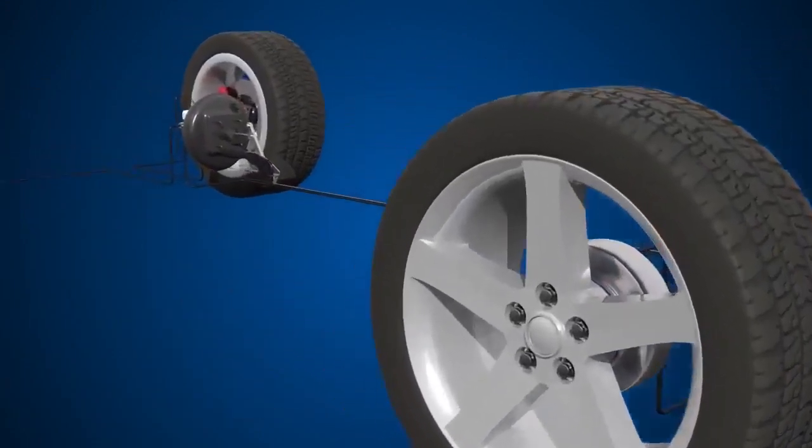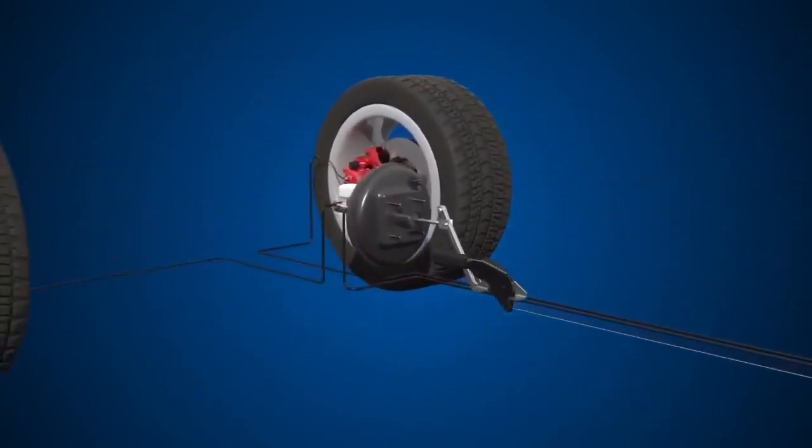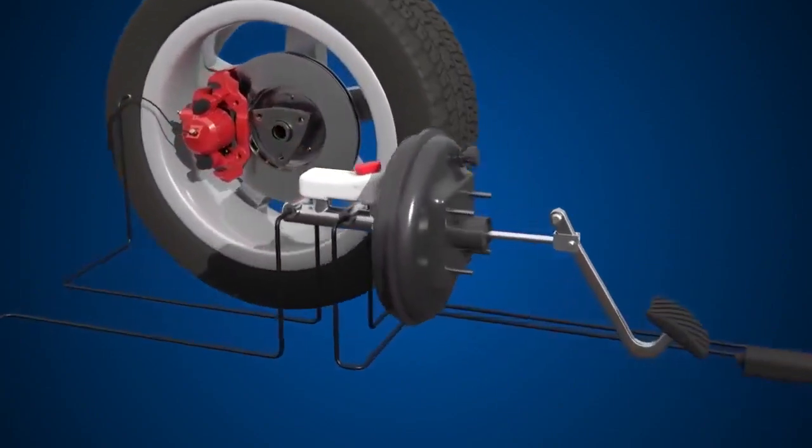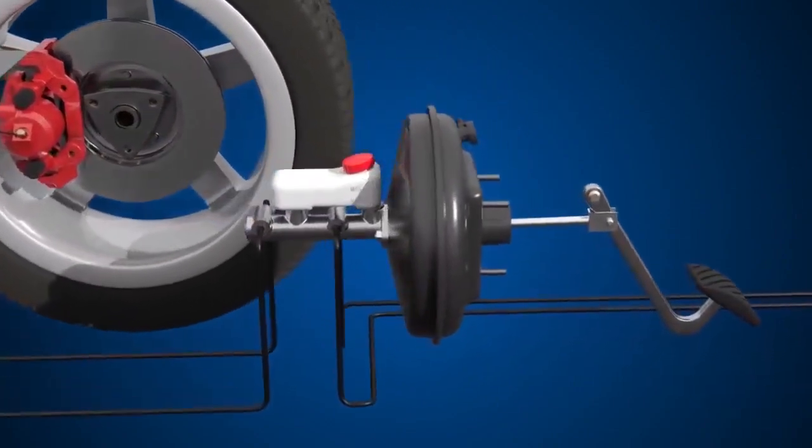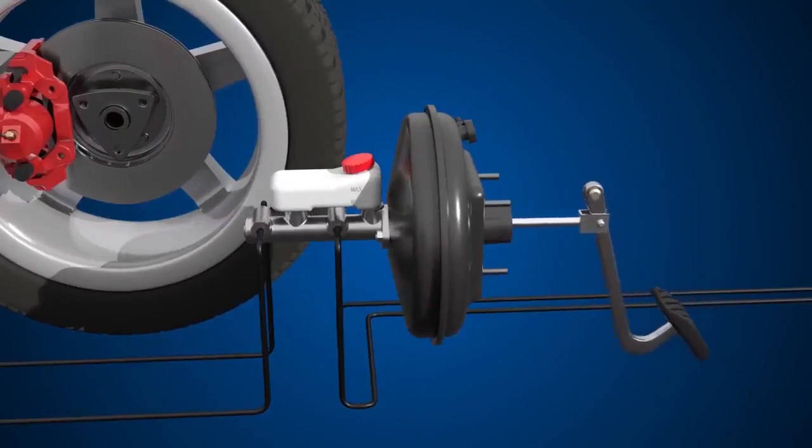Both disc brakes and drum brakes are controlled by a hydraulic system. When the brake pedal is pressed, hydraulic fluid is forced through hydraulic lines, activating the brakes.